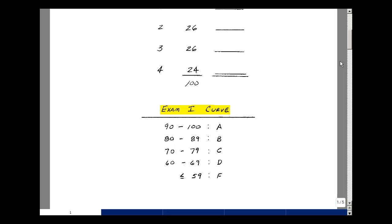From 90% to 100% was the A range, 80% to 89% is the B range, 70% to 79% the C range, and then from 60% to 69% the D range. If you had less than 59%, that was not a passing grade.